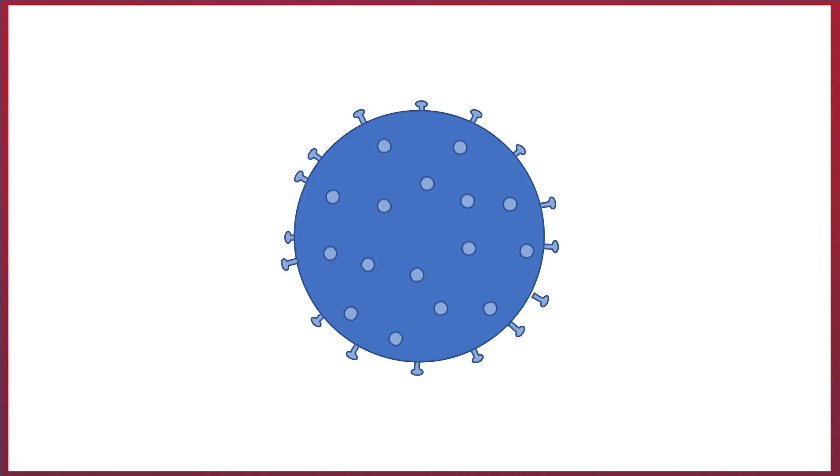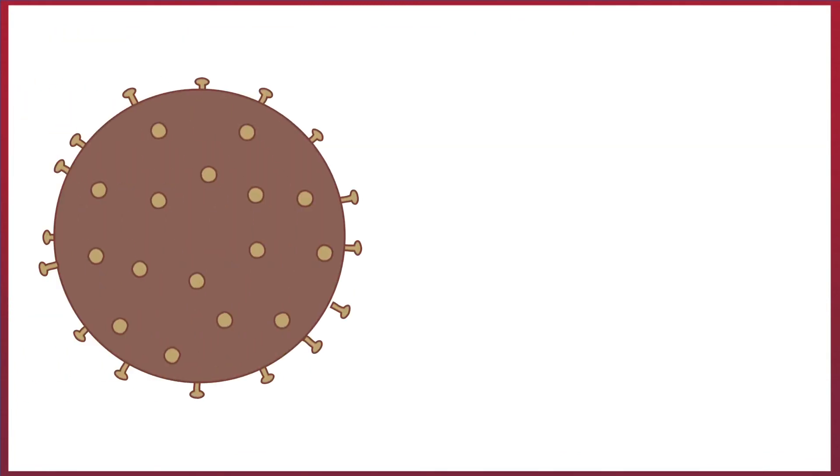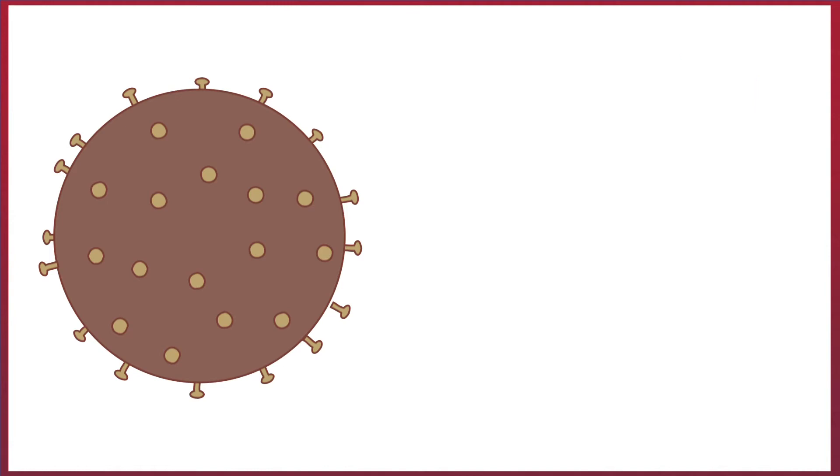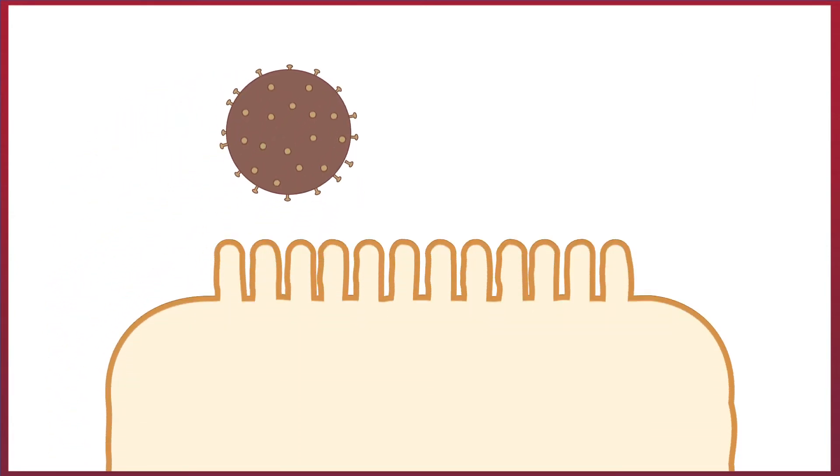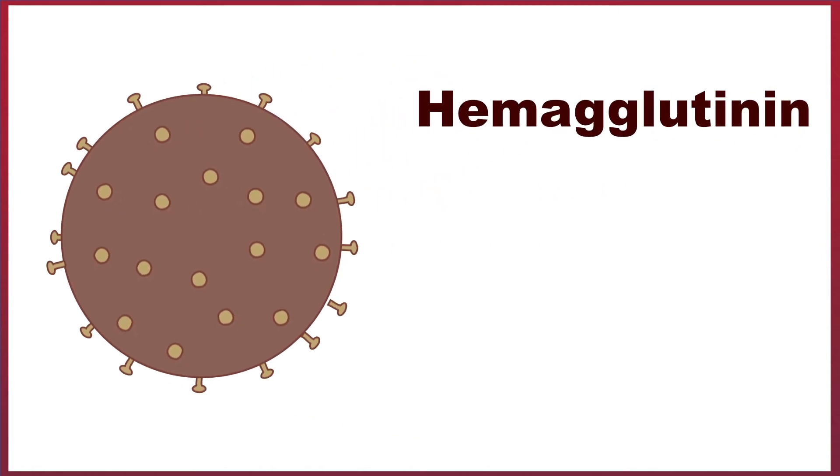Let's take a look at the influenza virus, and see how it replicates. Influenza targets columnar epithelial cells of the respiratory tract. The first step in the infection of these cells by the virus is for the virus to enter the cell. Influenza is an enveloped virus, with three types of integral membrane proteins. These are hemagglutinin, neuraminidase, and M2.